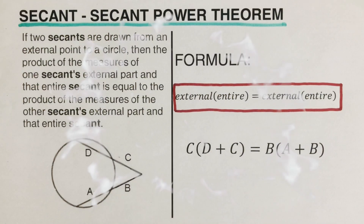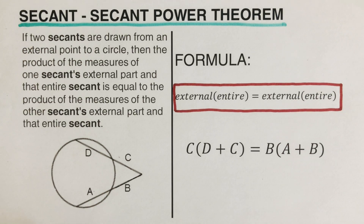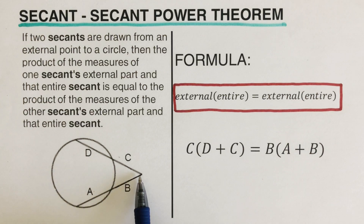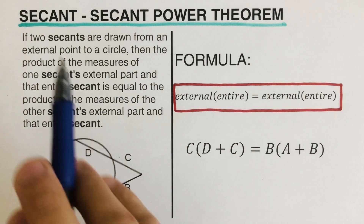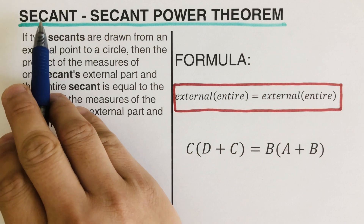Hello everyone. In this video we are going to determine the missing length of a secant whenever two secants are meeting each other from a point outside of a circle, and this can be done by using a theorem we call the secant-secant power theorem.